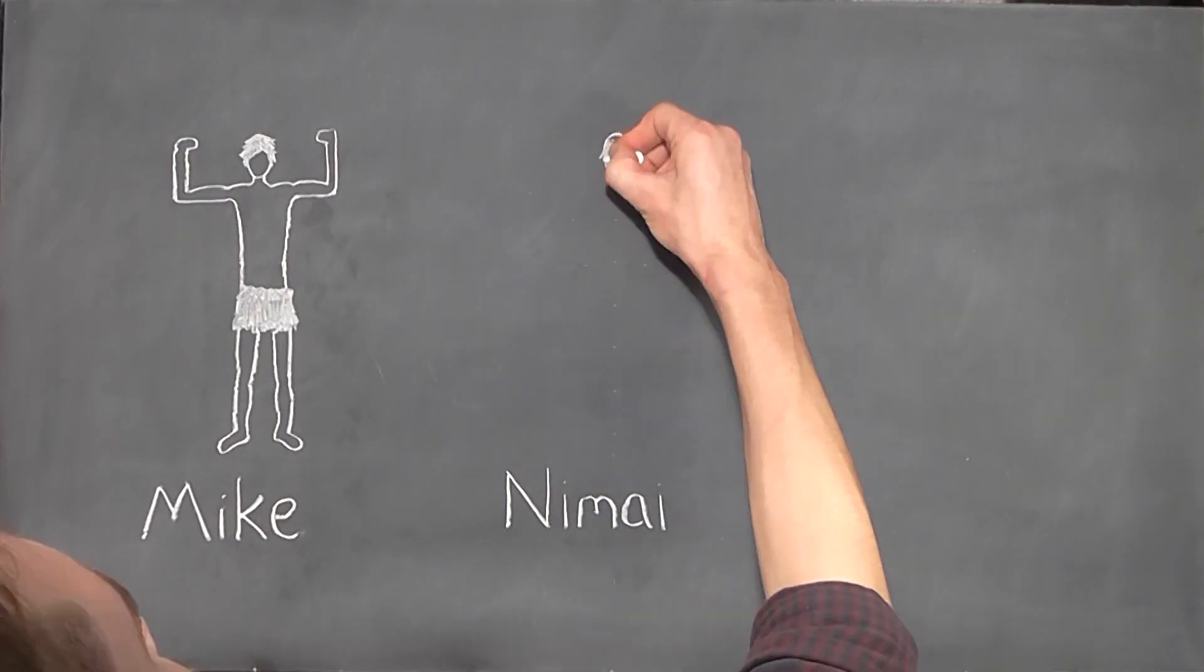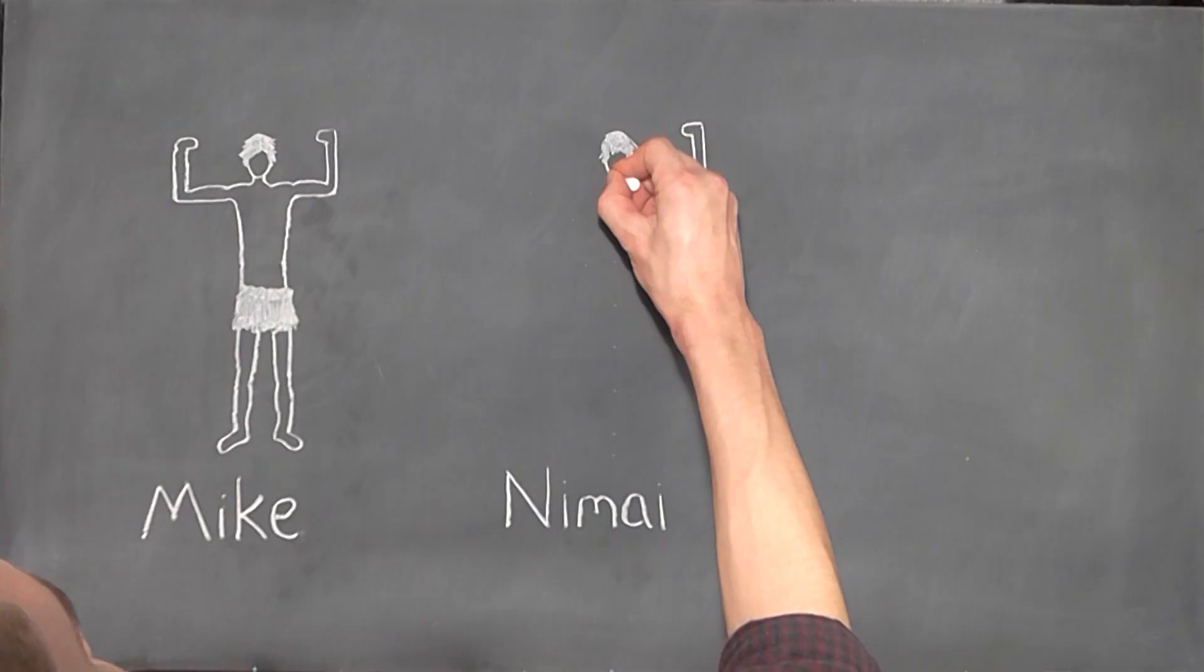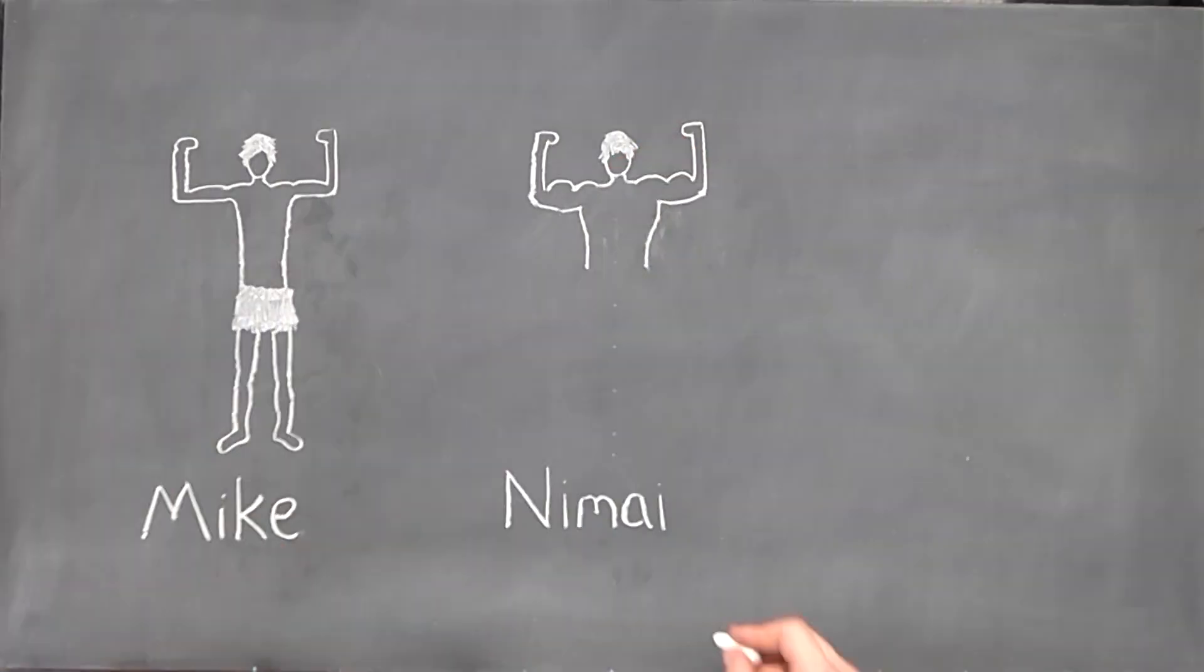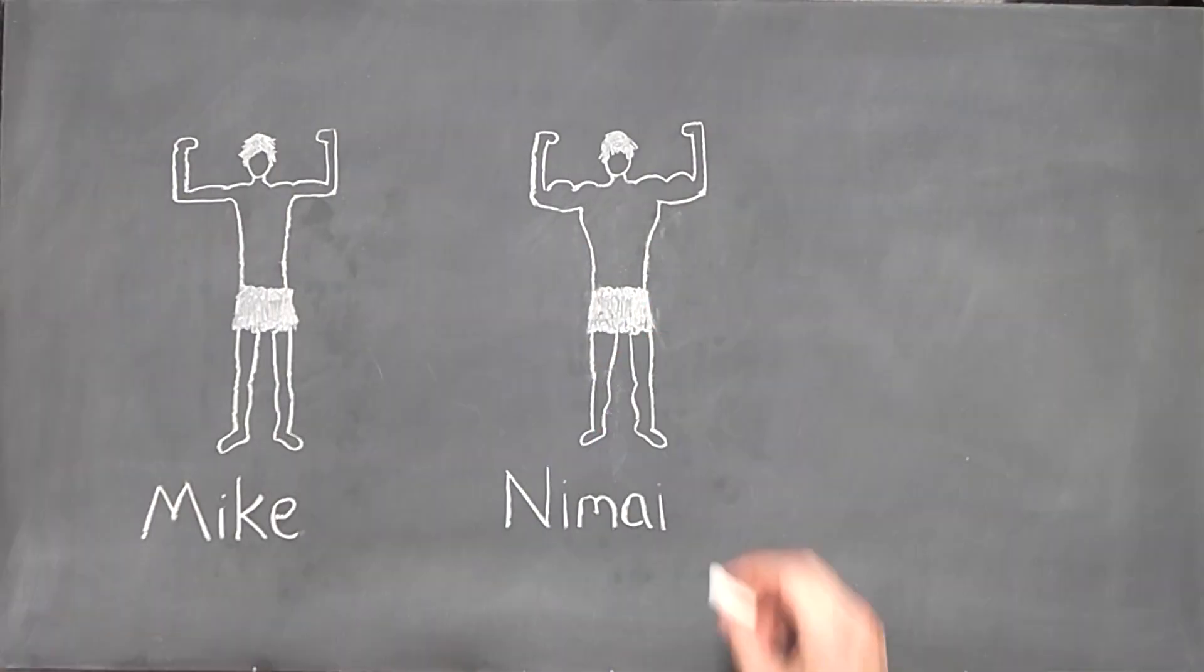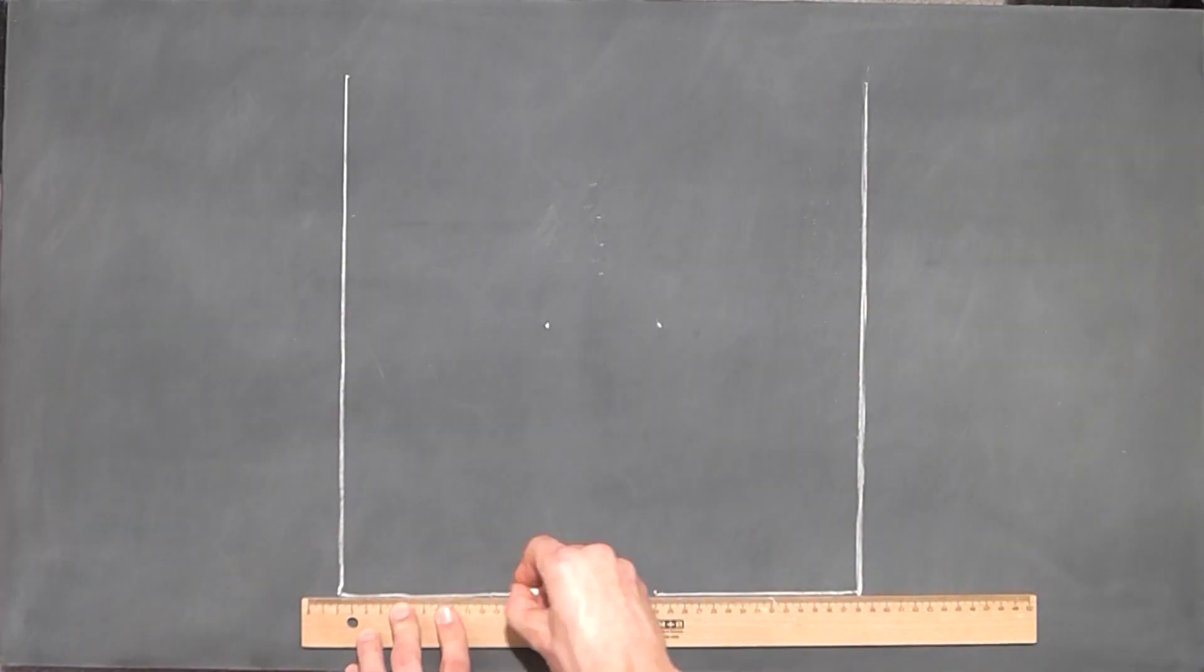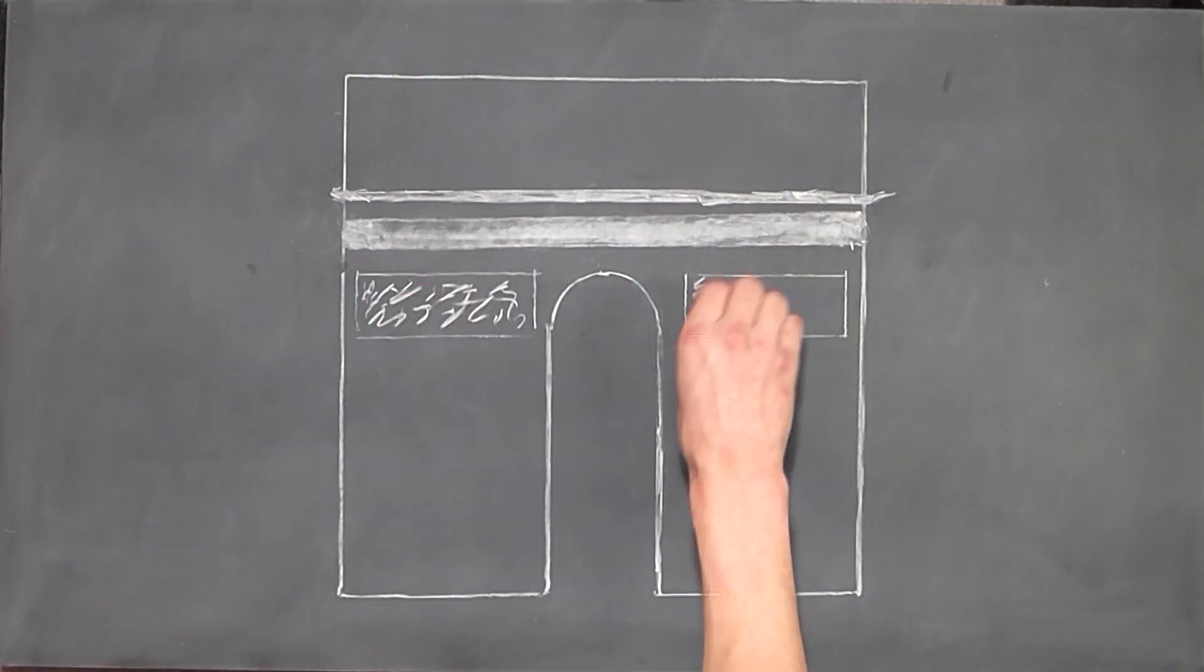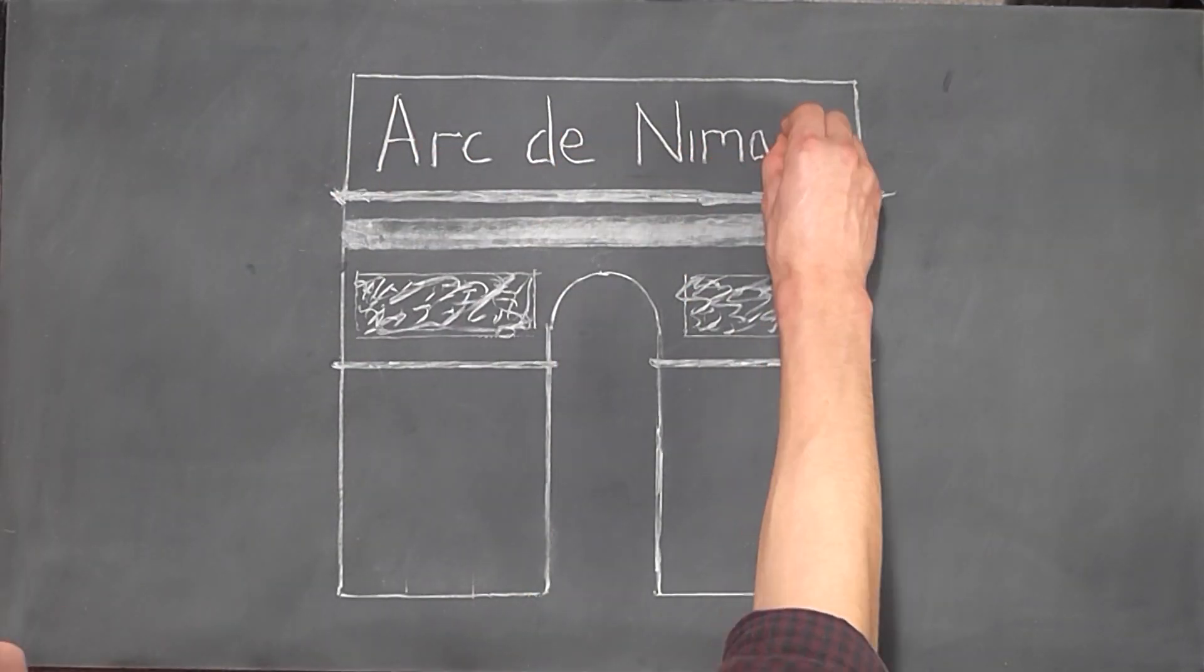Mike and Nimai are brothers living in the same tribe. They are identical in every respect other than one. Mike is far weaker than Nimai, who is incredibly strong. Here's the question. Which of these brothers stands a better chance of surviving and reproducing to pass on their genetic information?